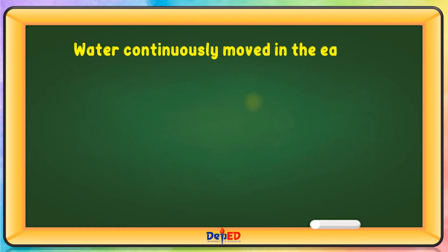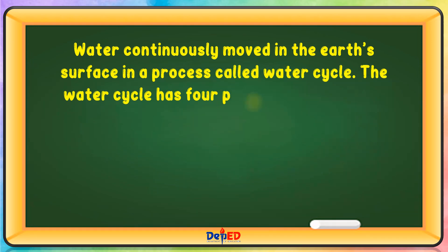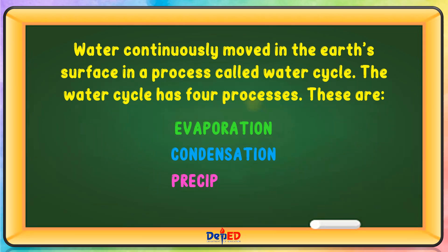Water continuously moves on the earth's surface in a process called the water cycle. The water cycle has four processes: evaporation, condensation, precipitation, and collection.